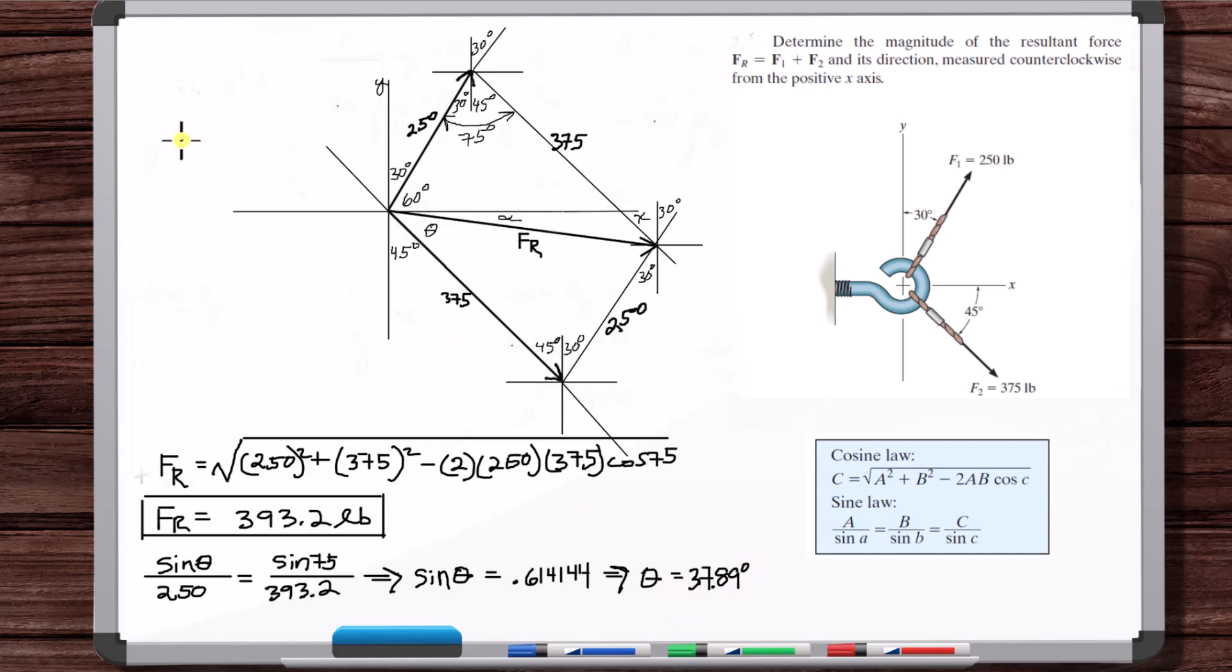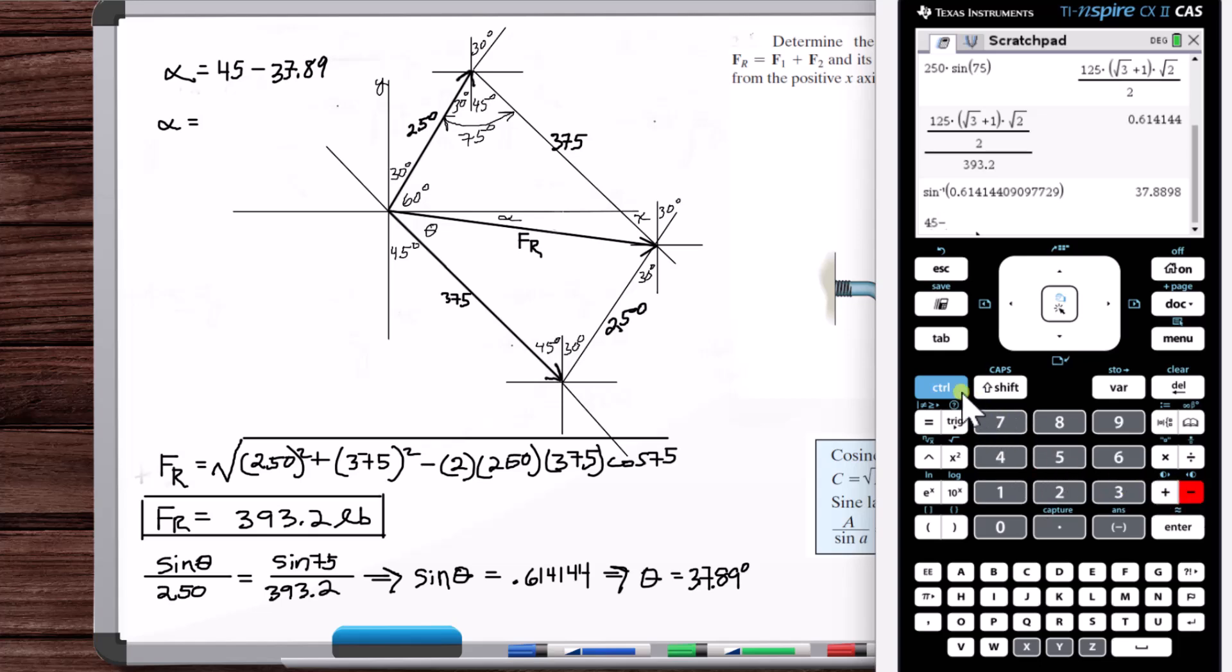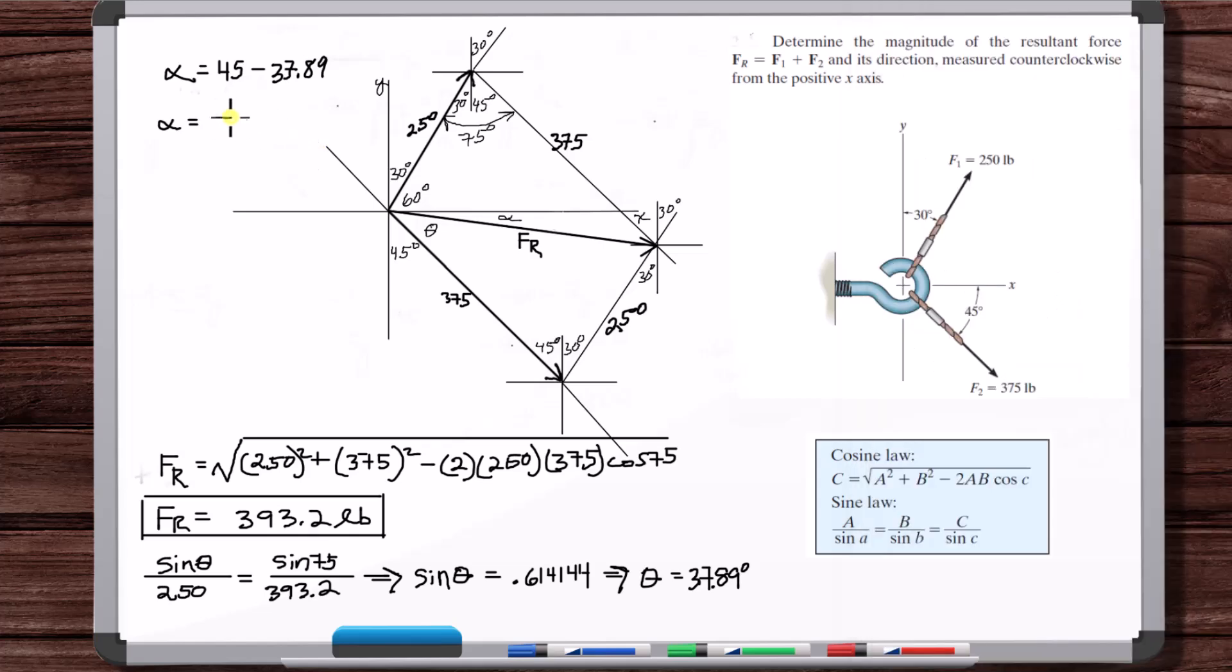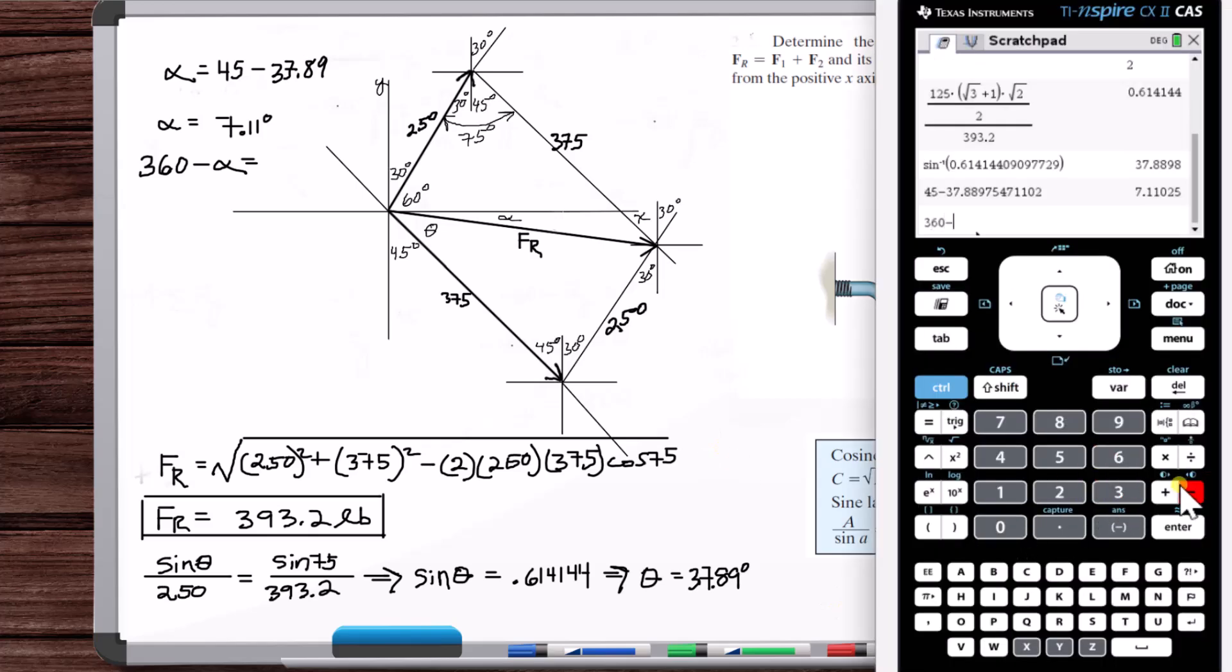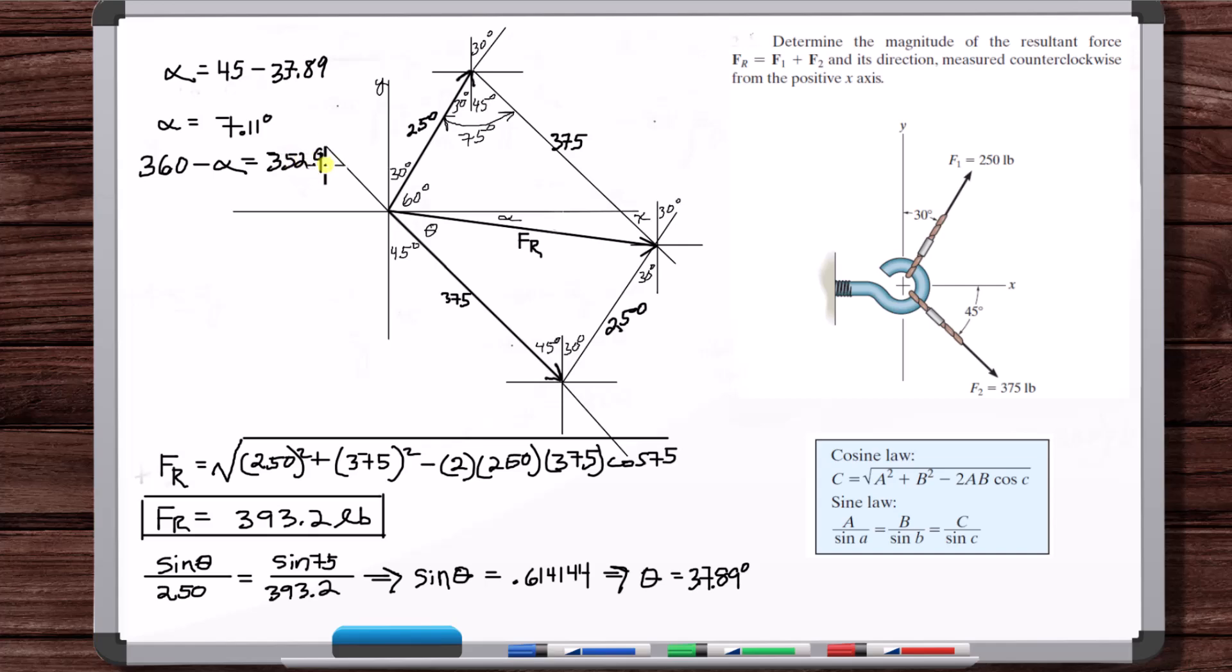So now alpha is equal to 45 minus that theta. So 45 minus 7.11 degrees. But it says the direction of FR measured counterclockwise from the positive x-axis. So it wants us to start here and go all the way around to FR. We need to take 360 minus alpha, 352.9 degrees.